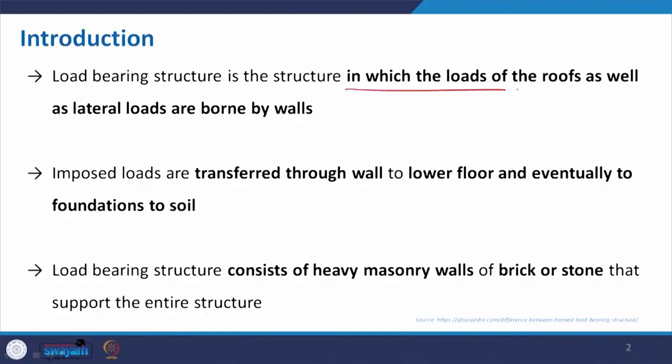The lateral load is also taken by the wall. There are two kinds of loads: one is the gravity load that comes from the slab or upper floors, which transmits through the wall to the foundation; the other is the lateral load — wind load and other loads like rain loads. This kind of lateral load is also taken care of by the wall. So the load bearing structure is one in which the loads of the roof as well as the lateral loads are borne by the walls.